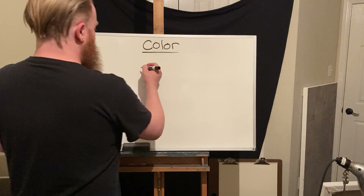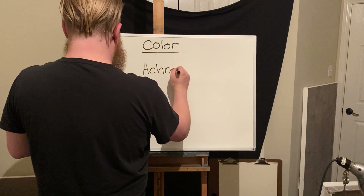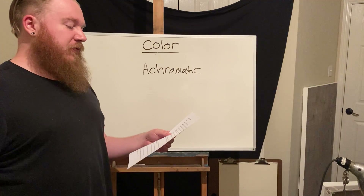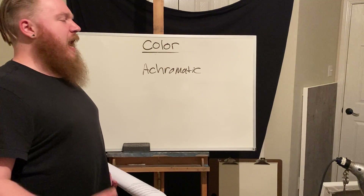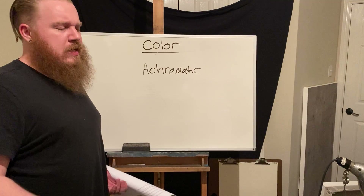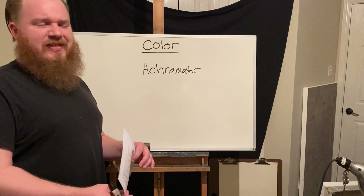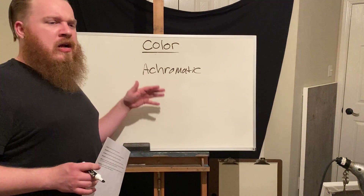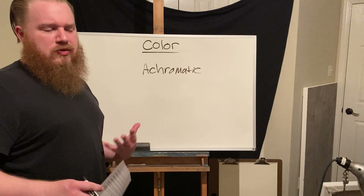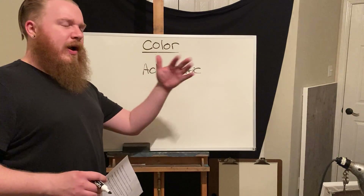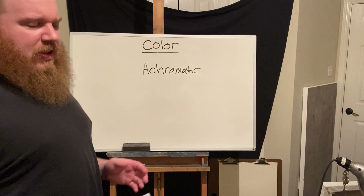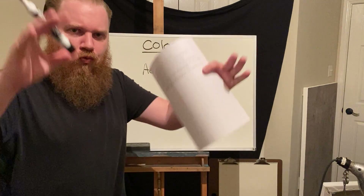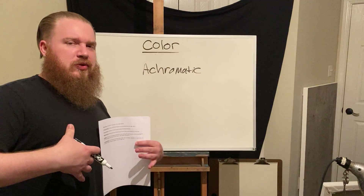Achromatic refers to a pigment without the properties of hue, often referred to as neutral. Achromatic colors would include white, black, and grays. Many earth tones such as browns and khakis are often referred to as achromatic, but gray, black, and white are the only true achromatic colors, because even neutral earth tones tend to lean warm or cool. Achromatic tones are those we perceive as neutral — not exaggerated like red or orange, nor subdued like blue or green.